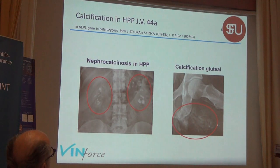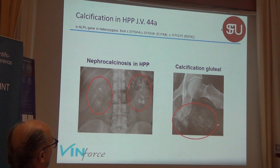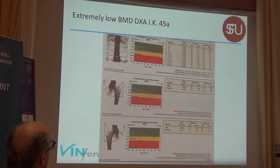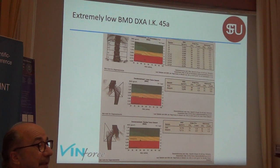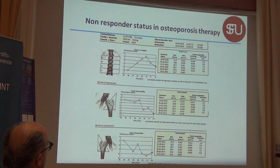This patient is 44 years old. The gene sequence shows nephrocalcinosis with calcification areas in the gluteal region. This is the bone mineral density — unexplained for decades — and then we found out that she has genetically proven HPP.